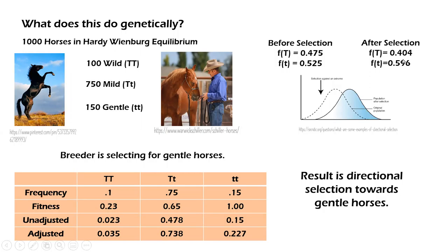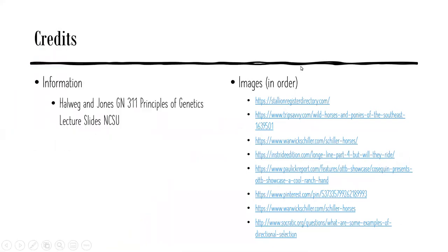After only one generation of selection, the frequencies of the genotypes are altered, so that the frequency of the gentle horses increases, while the frequency of the mild and wild horses decrease. This also affects the frequency of big T and little t, which decrease and increase respectively.